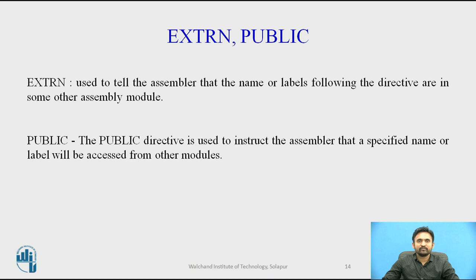The next directive is EXTRN. It is used to tell the assembler that the name or label following the directive is in some other assembly module. For example, if you call a procedure which is a program module assembled at a different time from that which contains the call instruction, you must tell the assembler that the procedure is external, which puts information in the object code file so that the linker can connect the two modules together.